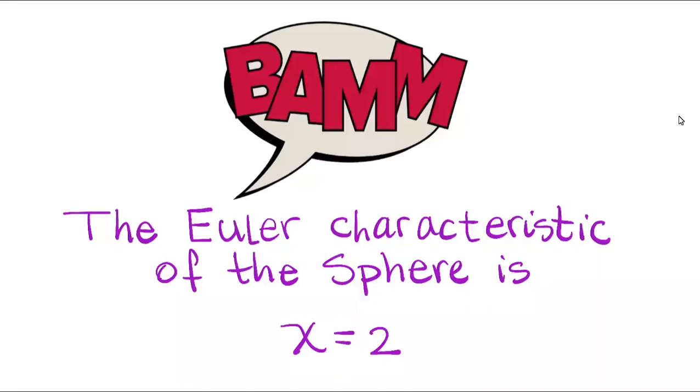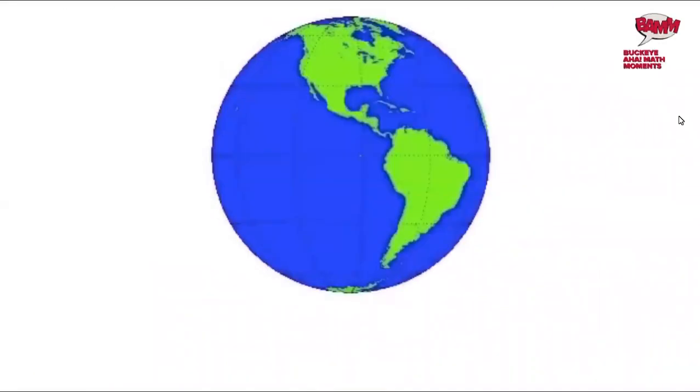Here we have an example, the Earth. The Earth is essentially a sphere. We can use the latitudes and longitudes as the edges, and where they meet there would be the vertices, and the regions they enclose the faces.